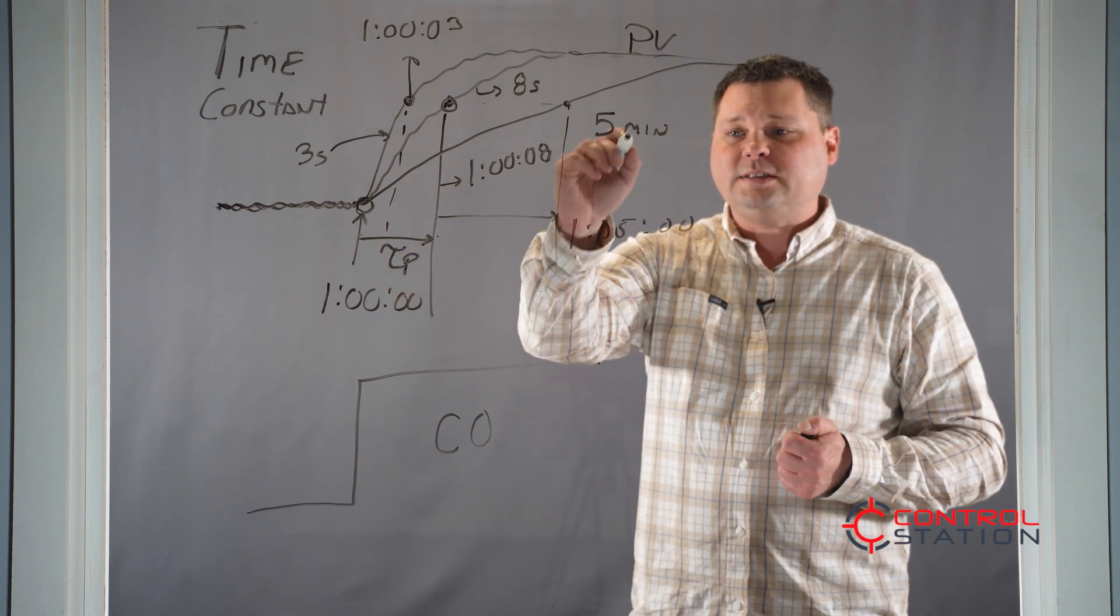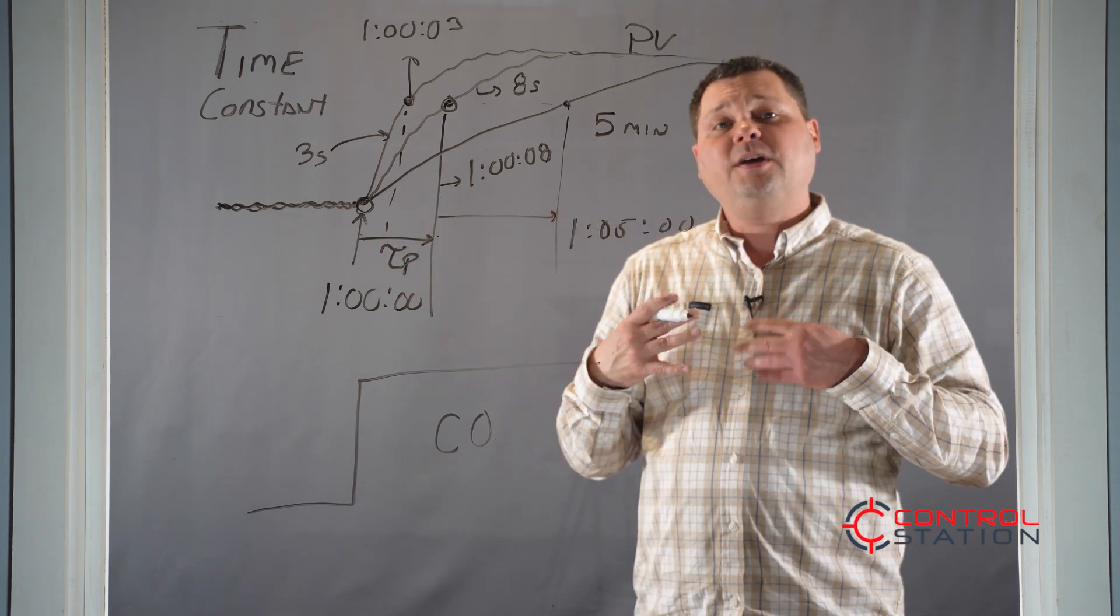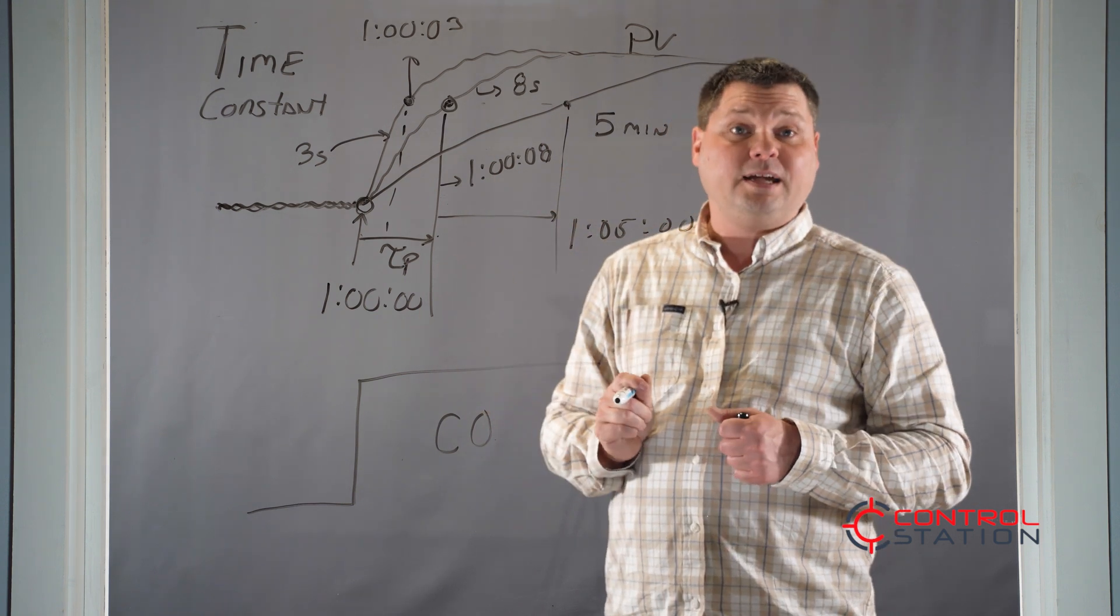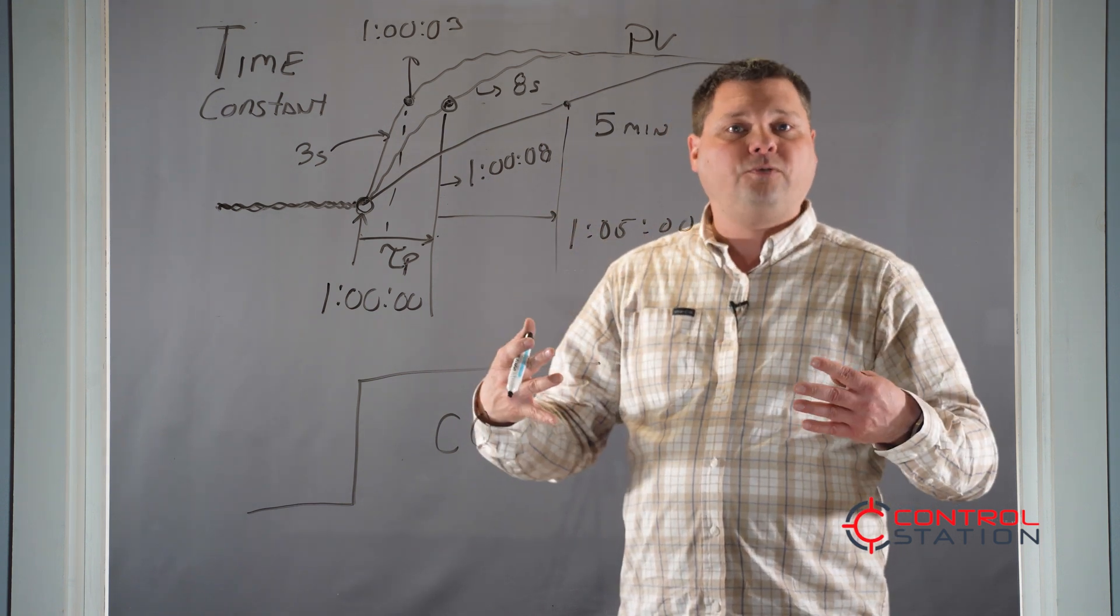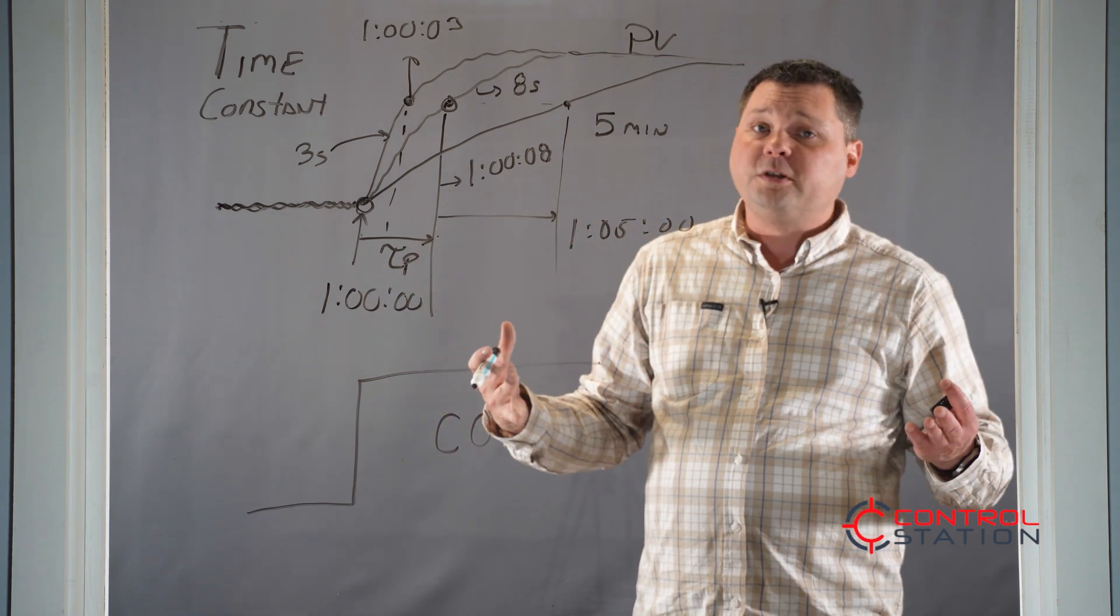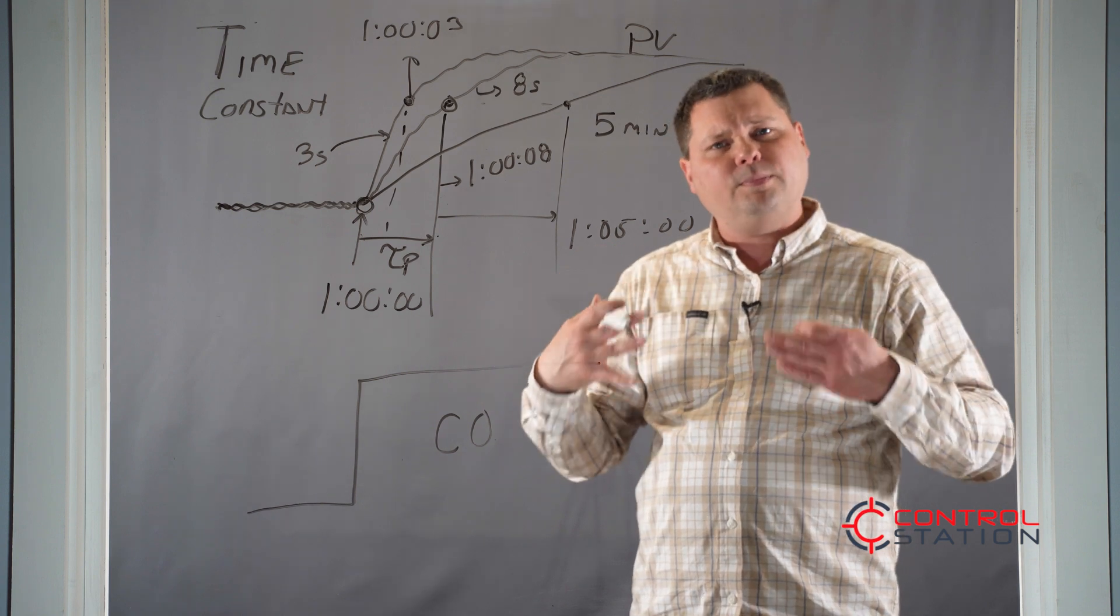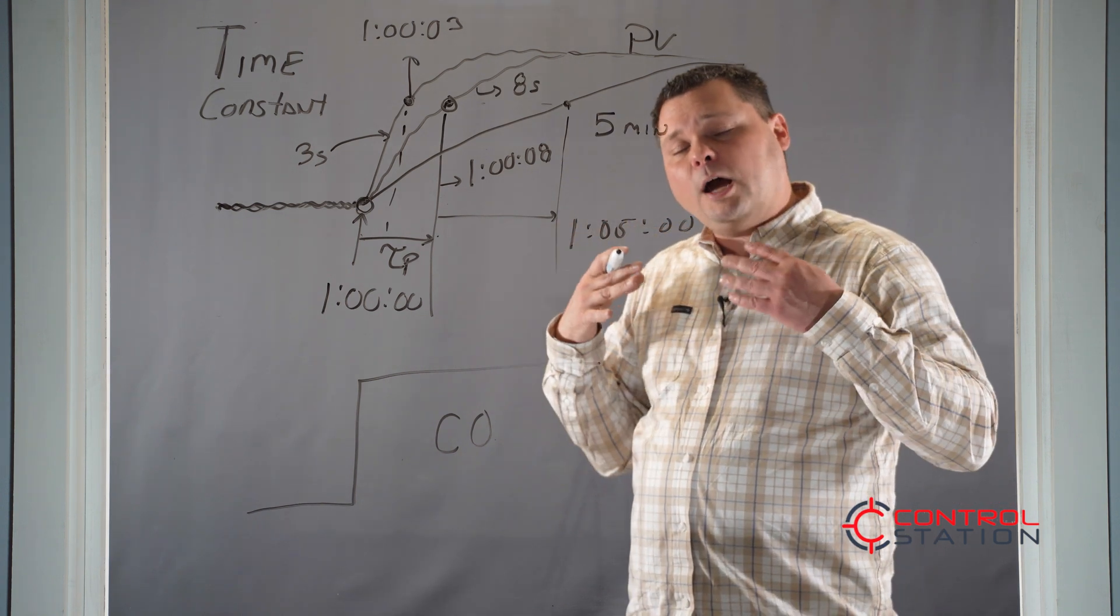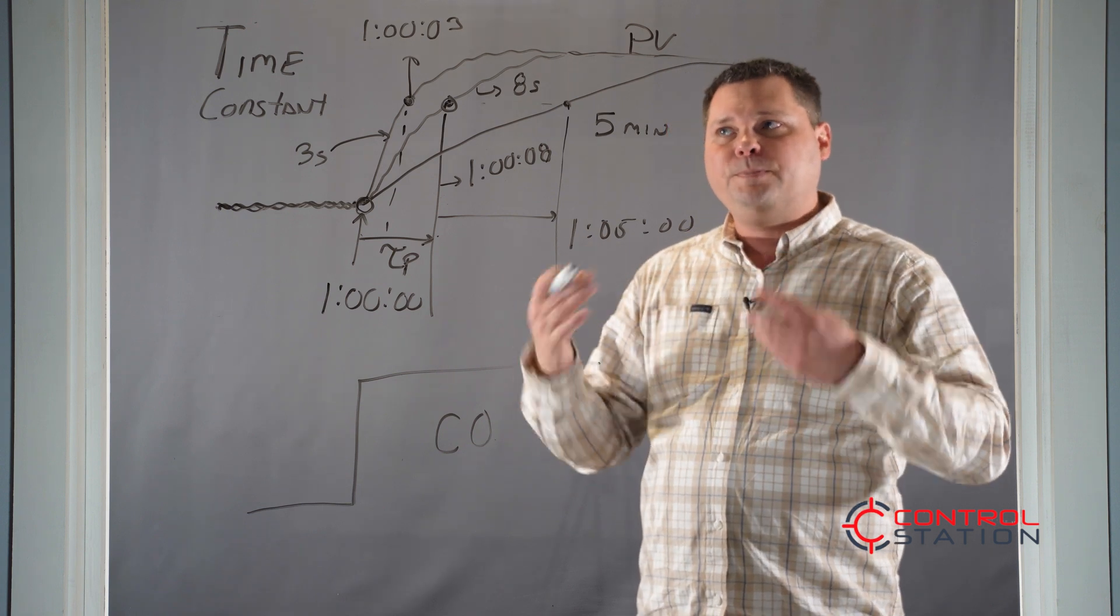If we've got a five-minute process time constant, it would be difficult to expect this loop to be able to get to a set point in five seconds. It's unnatural for the process to move significantly faster than this process time constant. You can force it in some ways, but you'd reduce the stability and robustness. So use this to help yourself understand the speed of the system.